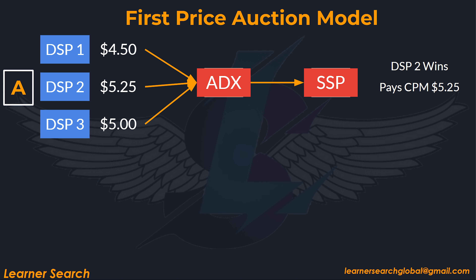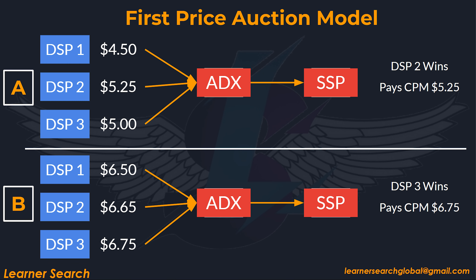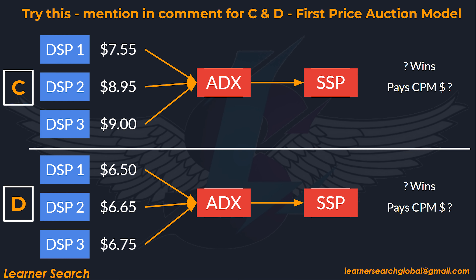Now let's deep dive into a few examples to understand better. As shown here, in section A, DSP2 wins the auction, paying their bid of $5.25. Similarly, in section B, DSP3 wins and pays $6.75. Now pause this video for a moment and write down your answers in the comment section for sections C and D. Let's see how sharp your auction knowledge is.